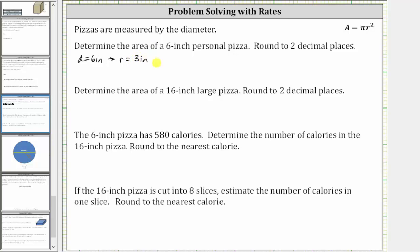The area of the six inch personal pizza is equal to pi r squared, where r is three inches. Therefore the area is equal to pi times the square of three inches. Three squared is equal to nine, so the exact area is nine pi square inches.